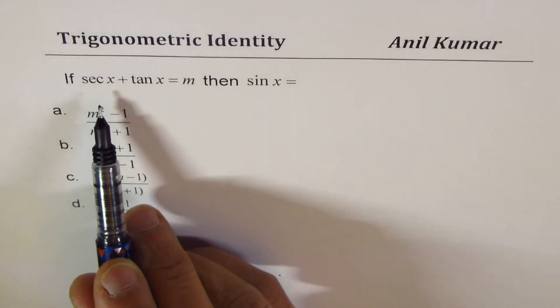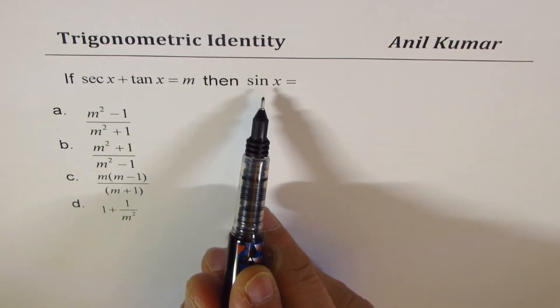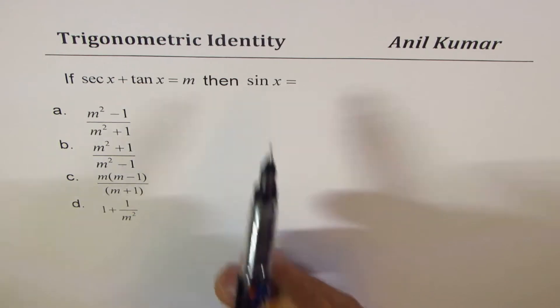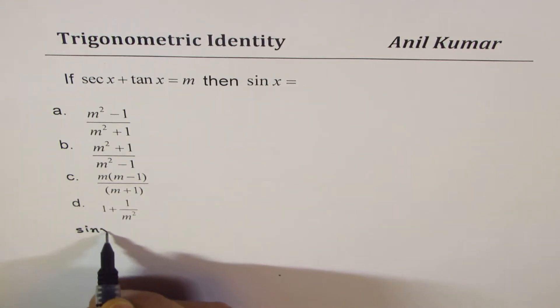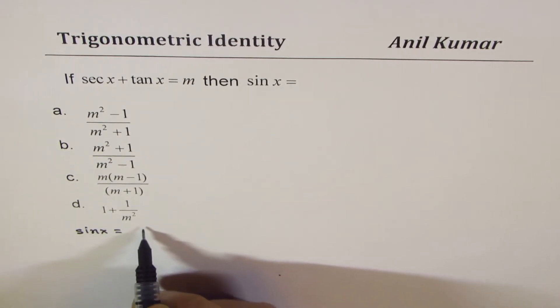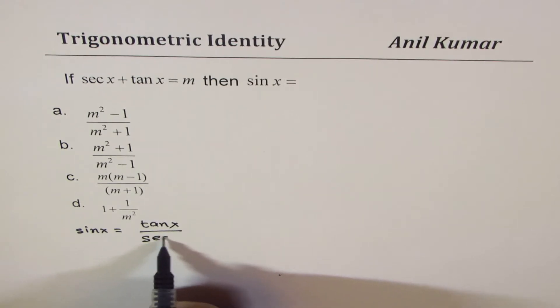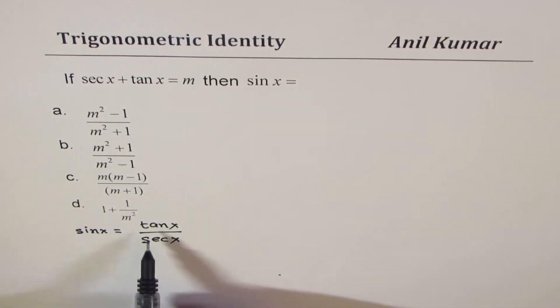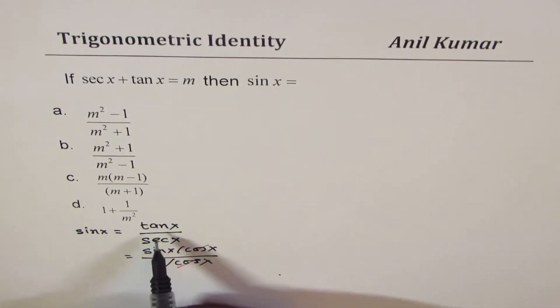Since we are talking about secant and tan and we want to find what sin x is, it's a good idea to recall that sin x can be written in terms of tan x over secant x. Now, tan x is, as you know, sin x over cos x and secant x is 1 over cos x. So that gives you sin x, correct? So this is very important to understand.